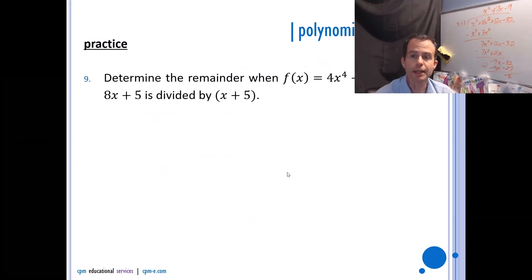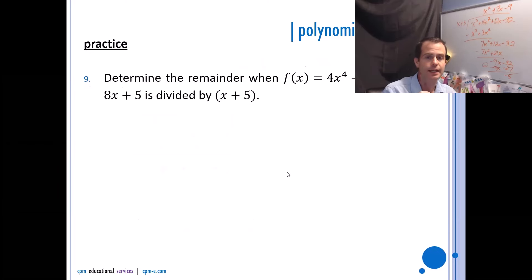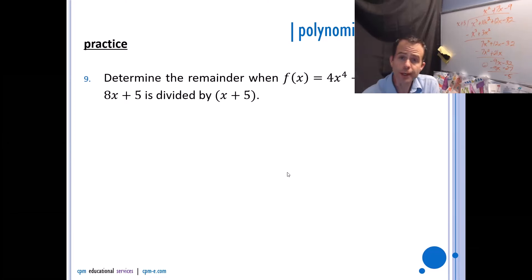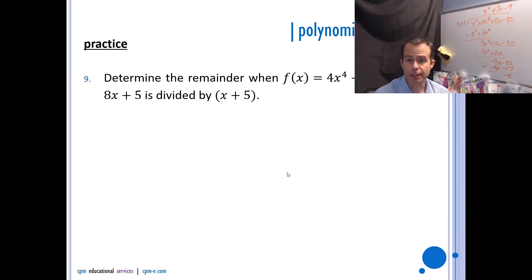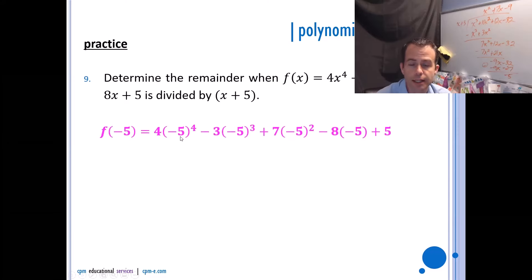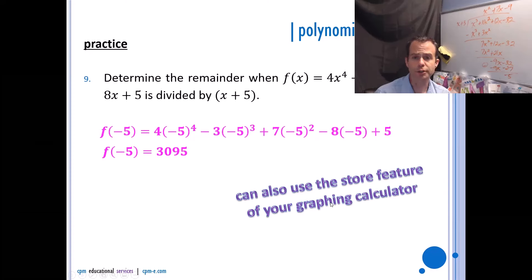Determine the remainder when f(x) = 4x⁴ − 3x³ + 7x² − 8x + 5 is divided by (x + 5). I don't need to do full division — I just use the remainder theorem. Plugging in x = −5 into f(x) gives the remainder. Doing the math, I end up getting 3,095. You can also use the store feature on your graphing calculator: store −5 as x, then type in the expression and hit enter to get 3,095.